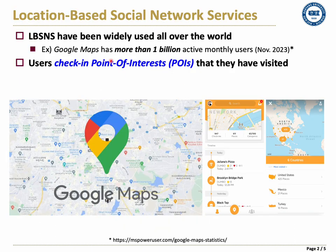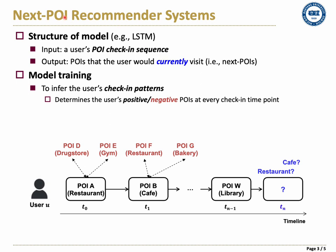Recently, location-based social network services such as Google Maps have been widely used all over the world. On these platforms, users check in POIs that they have visited. The large amounts of check-in records trigger intensive research on next POI recommender systems.